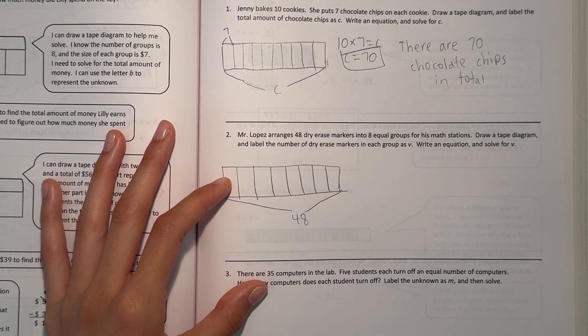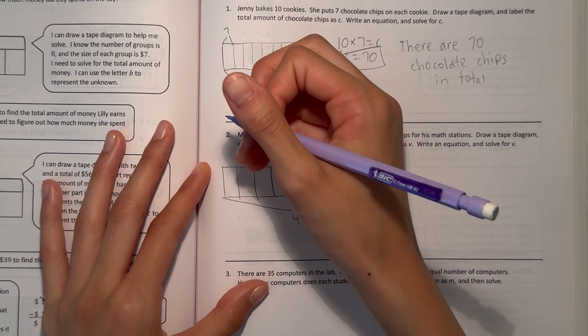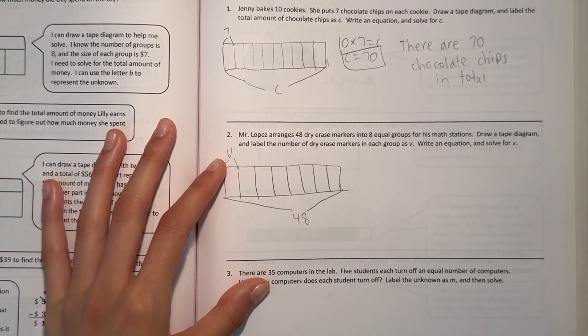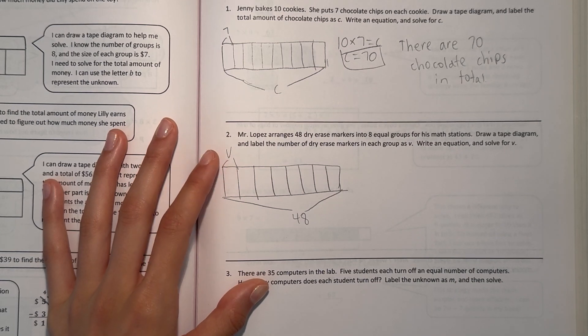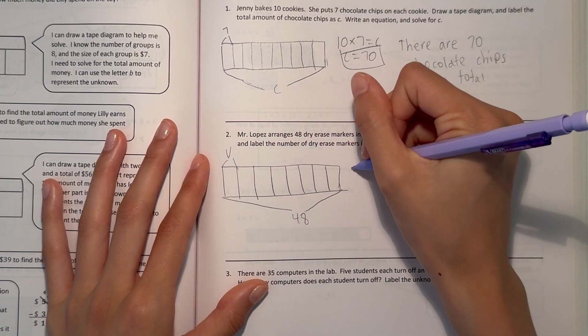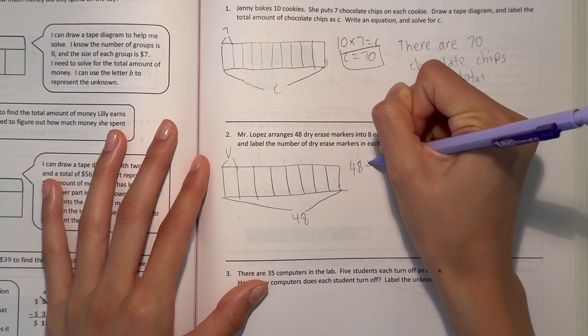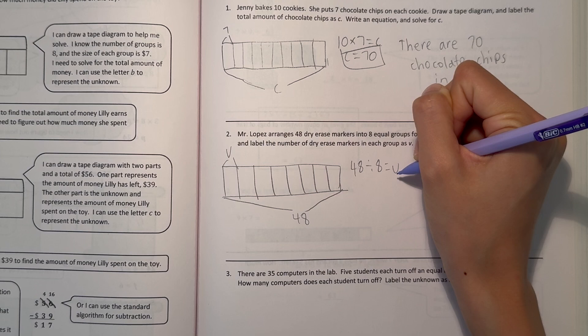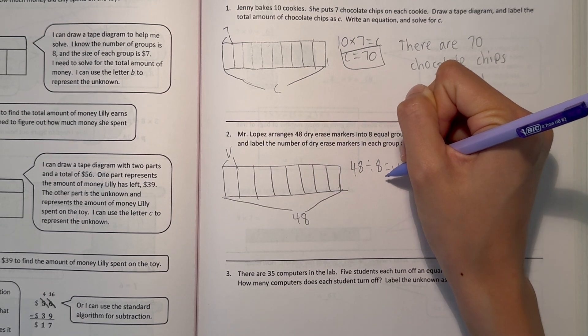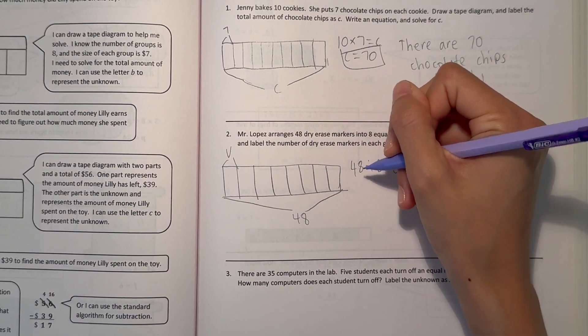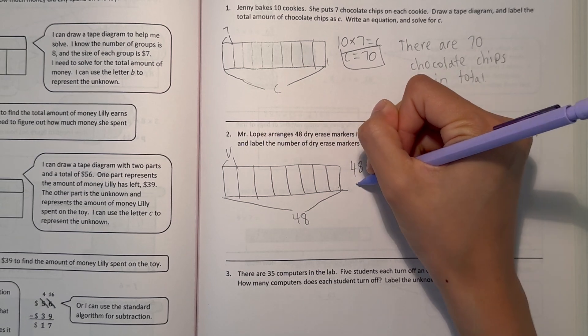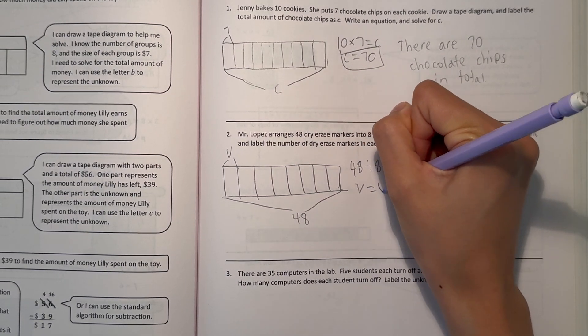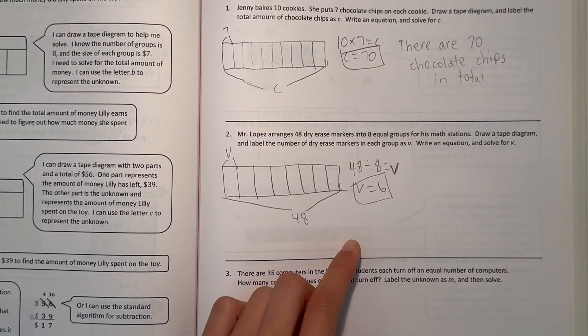We want to find out how many are in each group, and that will be V. How many markers are in each group. So we have 48 divided by 8 equals V, and 48 divided by 8 is really 6. So then V equals 6. So that's our answer.